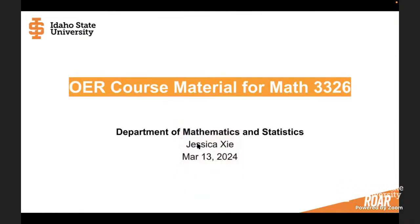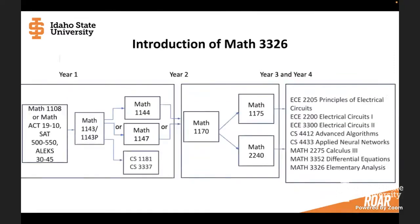This is Jessica. I'm from the Department of Mathematics and Statistics, so I will talk about the OER course development for Math 3326. This is a degree map for most STEM students. For students majoring in any of STEM majors in their year one, they will take 1144, 1147. Those are college algebra and trigonometry.